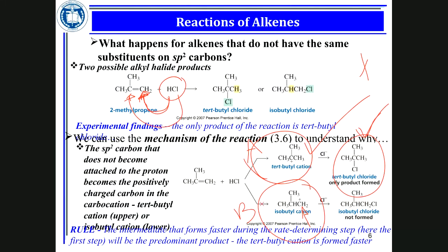If a catalyst is brought in and the opposite occurs — hydrogen adds to the other carbon — you get the anti-Markovnikov product. You will hear about Markovnikov and anti-Markovnikov addition repeatedly in this chapter. By the time you finish Chapter 8, you must know Markovnikov addition well before moving on to organic chemistry 2.